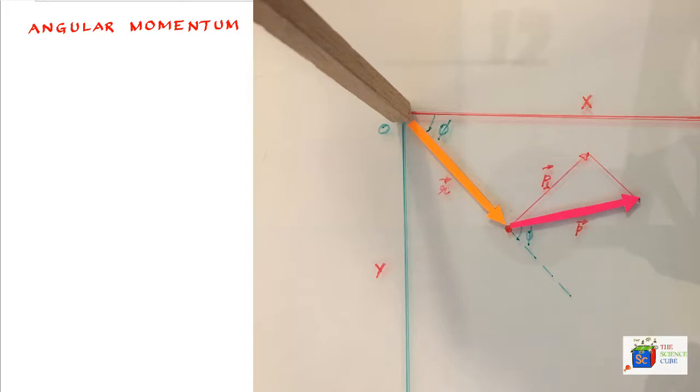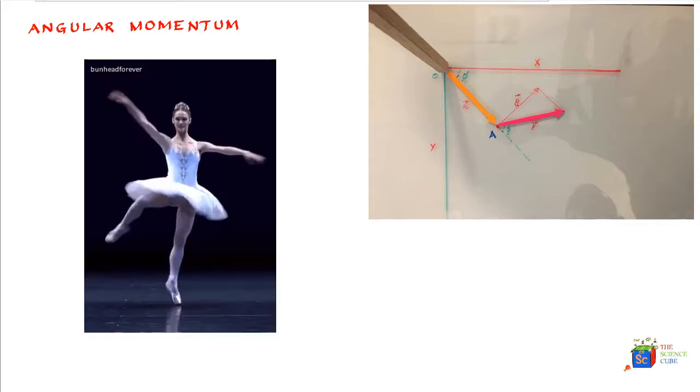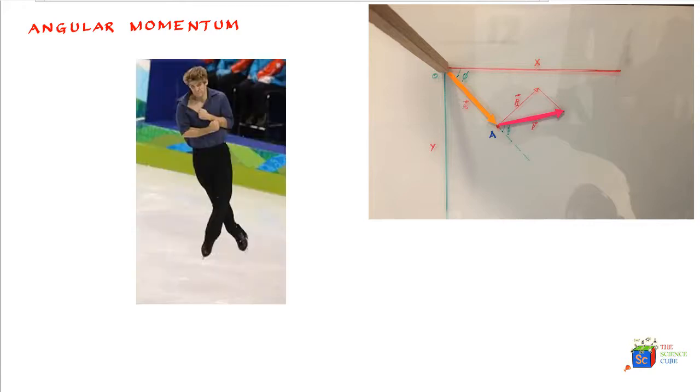This is often denoted by the symbol L. Now the study of angular momentum also gives us a window into understanding various real life situations like how ballet dancers are able to deliver amazing turns and how an ice skater can twist and turn to give those magical performances.